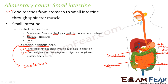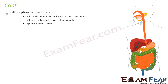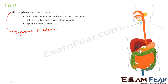Since digestion is complete in the duodenum, the purpose of the jejunum and ileum is mainly absorption. Digestion occurred in the buccal cavity, stomach, and duodenum. The jejunum and ileum are responsible for absorbing the digested food.